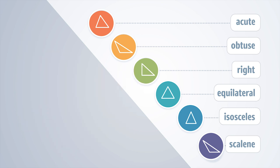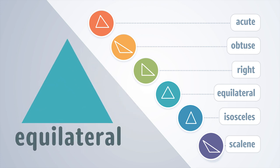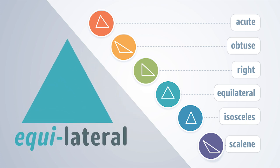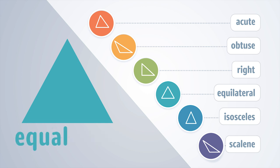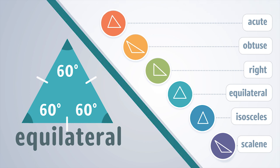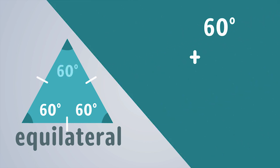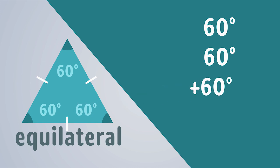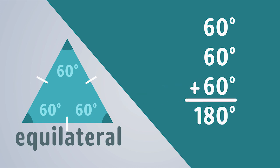The next type of triangle is an equilateral triangle. The prefix equi means equal. All sides of an equilateral triangle are equal in length. The slashes in the sides indicate that the side lengths are equal. The angles are equal too — each angle of an equilateral triangle measures 60 degrees. 60 degrees plus 60 degrees plus 60 degrees equals 180 degrees.